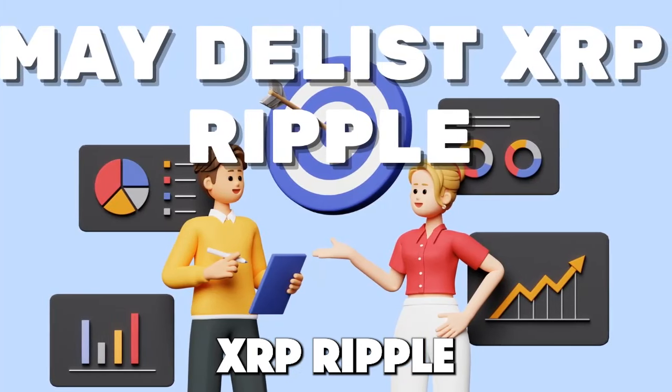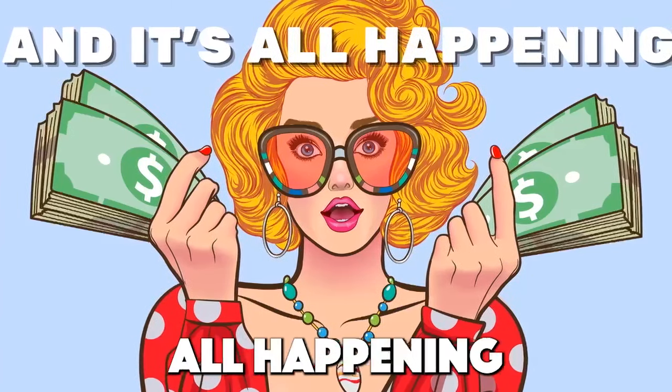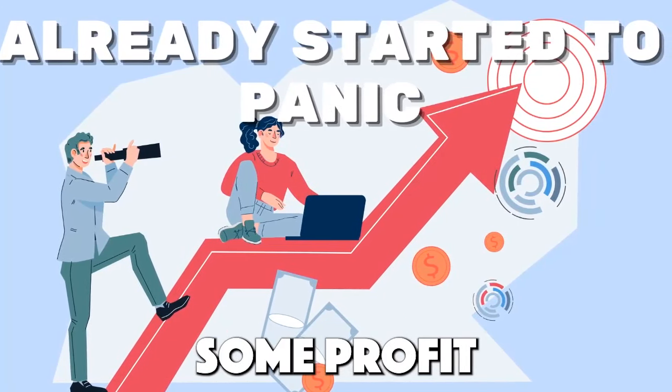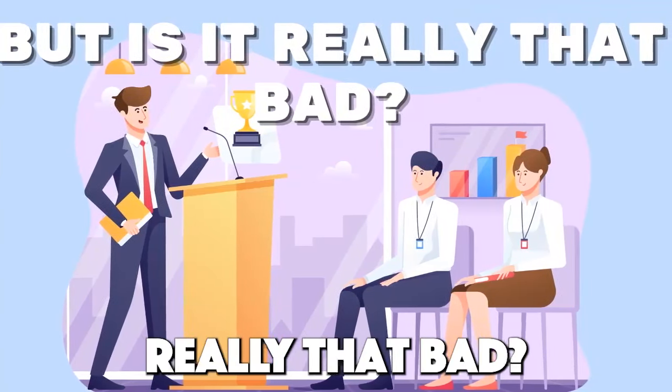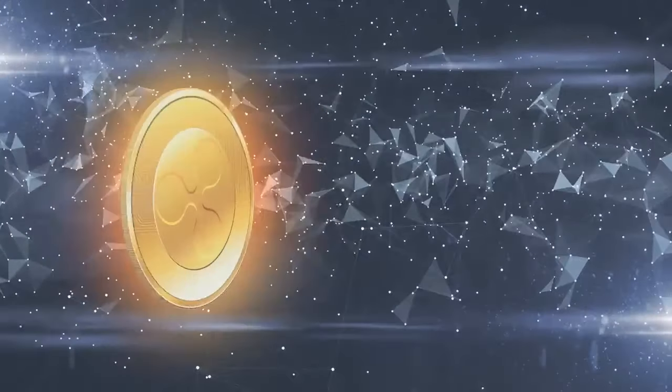This could be called a tragedy. Coinbase, one of the largest crypto exchanges in the world, may delist XRP Ripple. This is terrible news for XRP Ripple holders, and it's all happening because of the lawsuit with the Securities and Exchange Commission. Many have already started to panic, selling all their XRP Ripple coins in hopes of securing at least some profit. But is it really that bad? What do the experts think? You'll find the answers to your questions in this video.